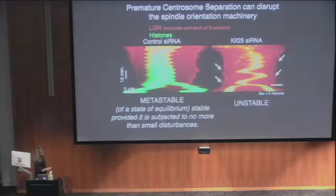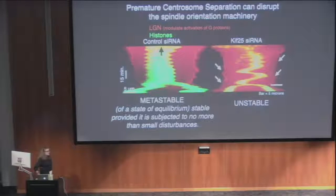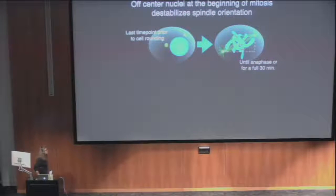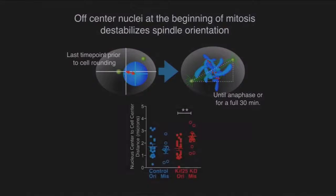We wanted to know why the spindle is metastable versus unstable, so we looked at the geometry of the cell. The only difference we could see is that in control cells, nuclear envelope breakdown occurs with the nucleus right in the center of the cell, whereas in the KIF25 knockdown, the nucleus seems to be off to the edge of the cell. We went back to the Biostation and looked at nucleus position relative to centrosomes and spindle orientation at anaphase. Our data showed that knocking down KIF25 gives a large increase in cells that misorient their spindles, correlated with having an off-center nucleus when they enter mitosis.